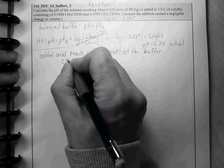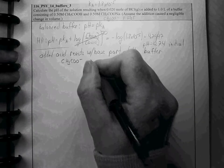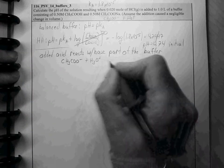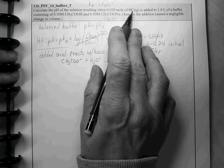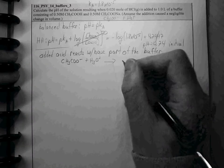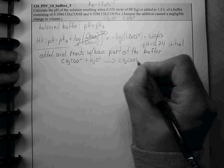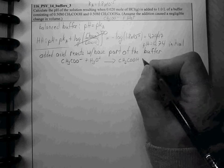So, we can show that. Here's the base part of the buffer, the acetate ion, the conjugate base. It's going to react with the H3O+ that's generated when this strong acid is put into solution. And we generate an equal amount of our weak acid.